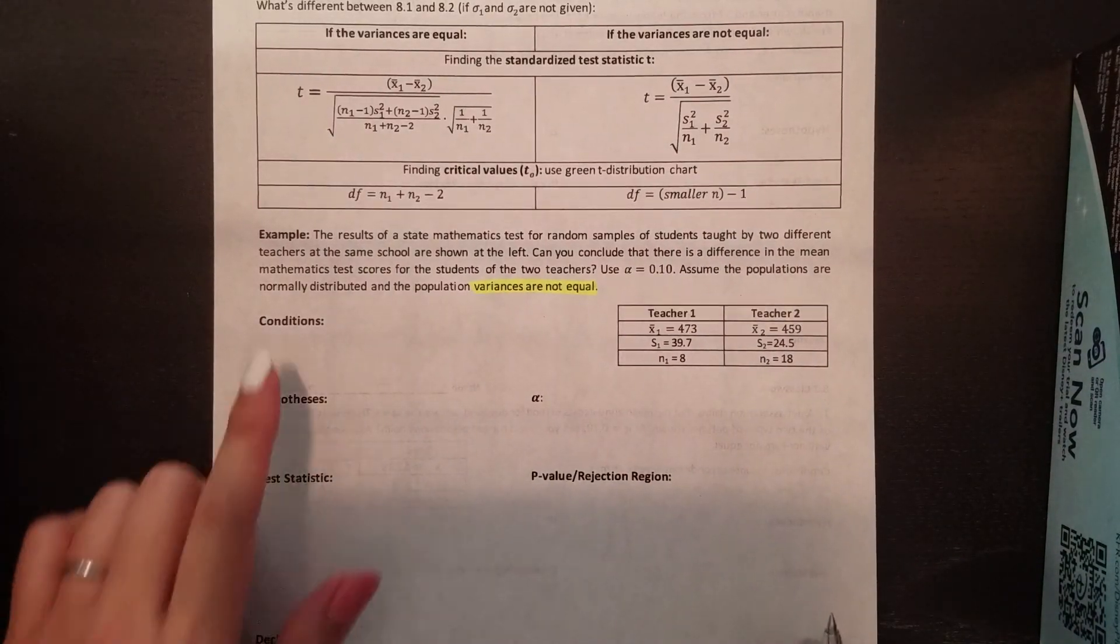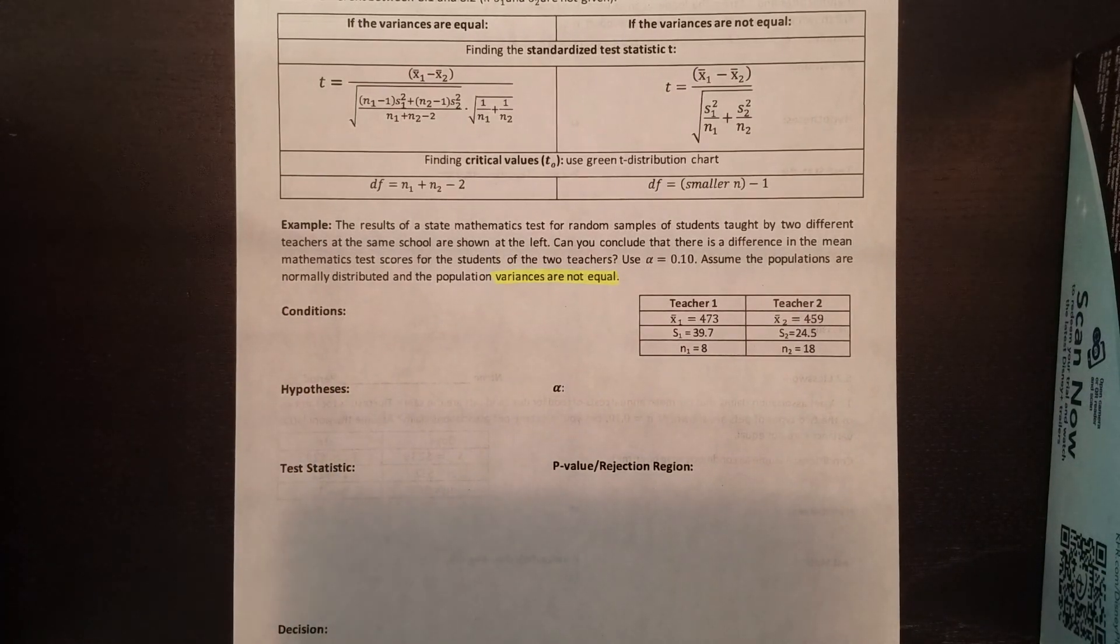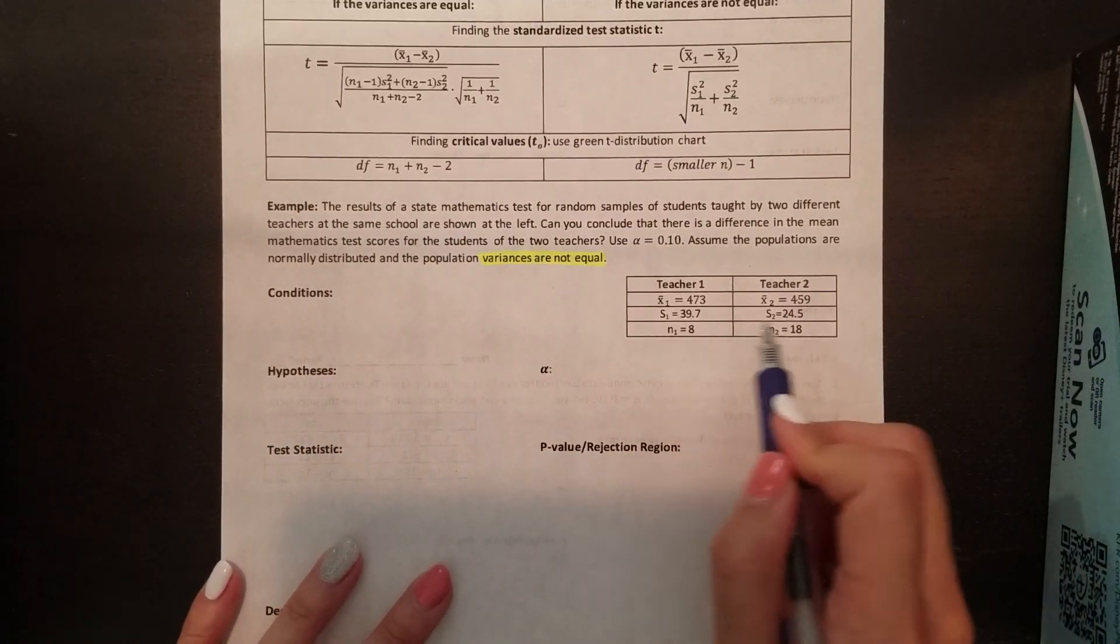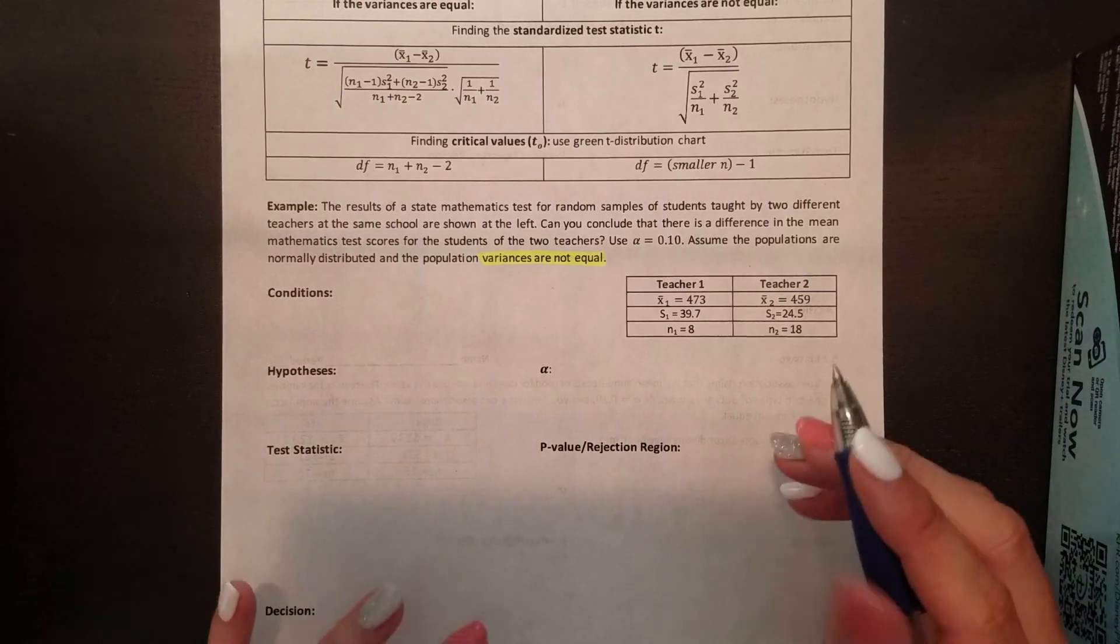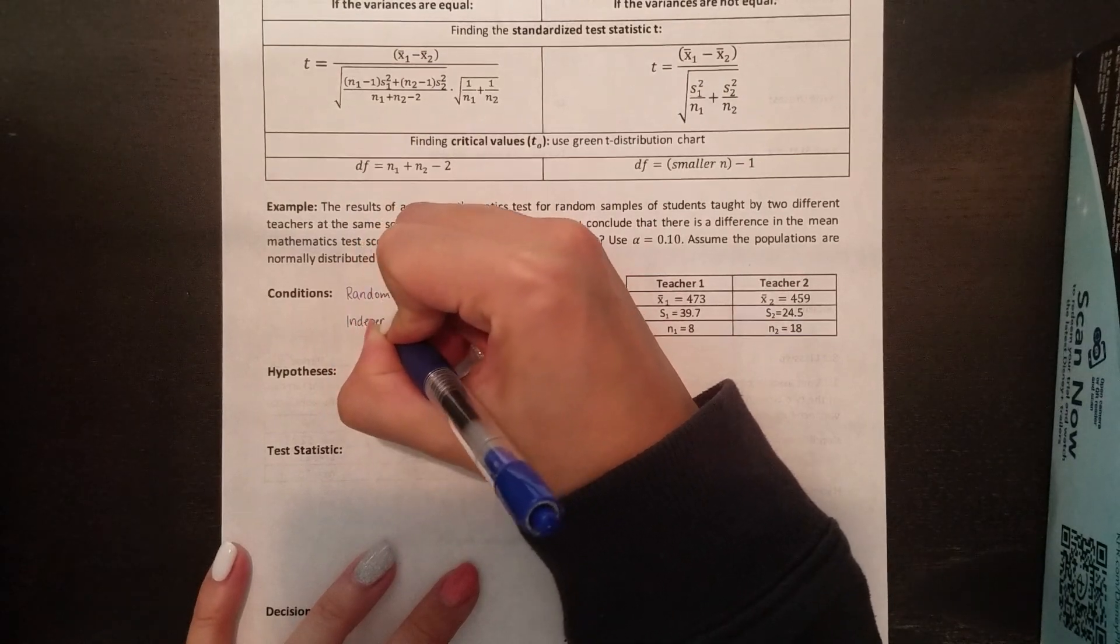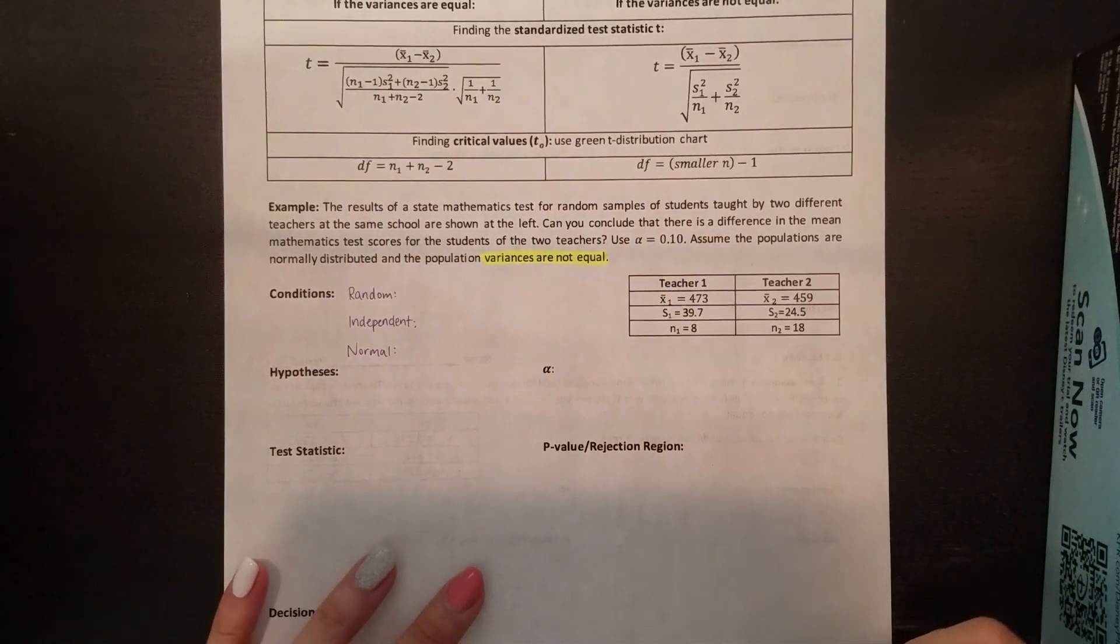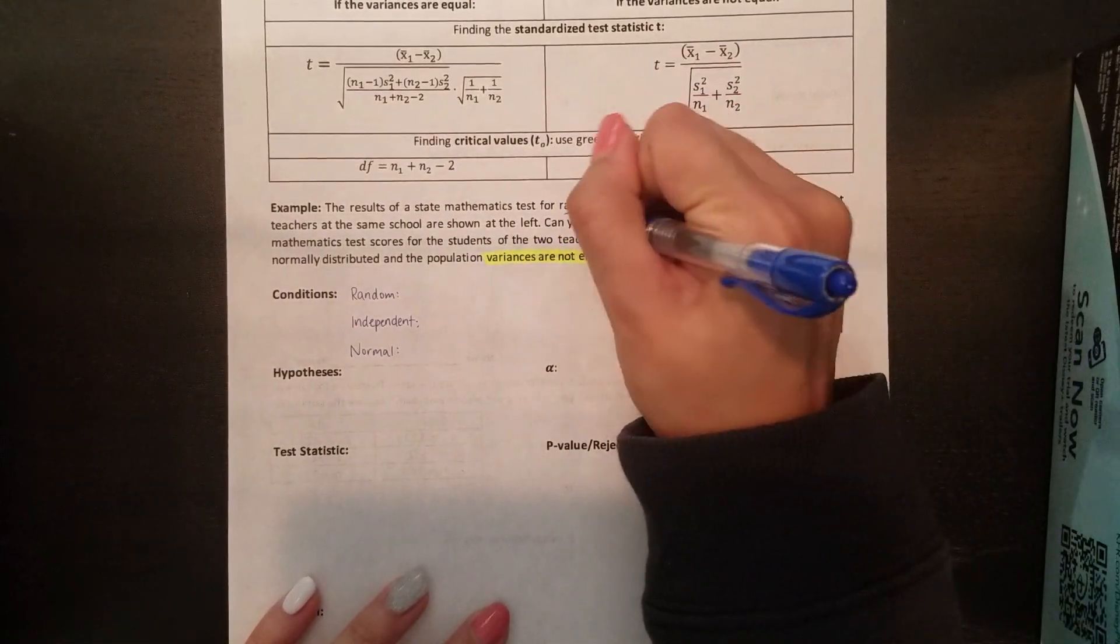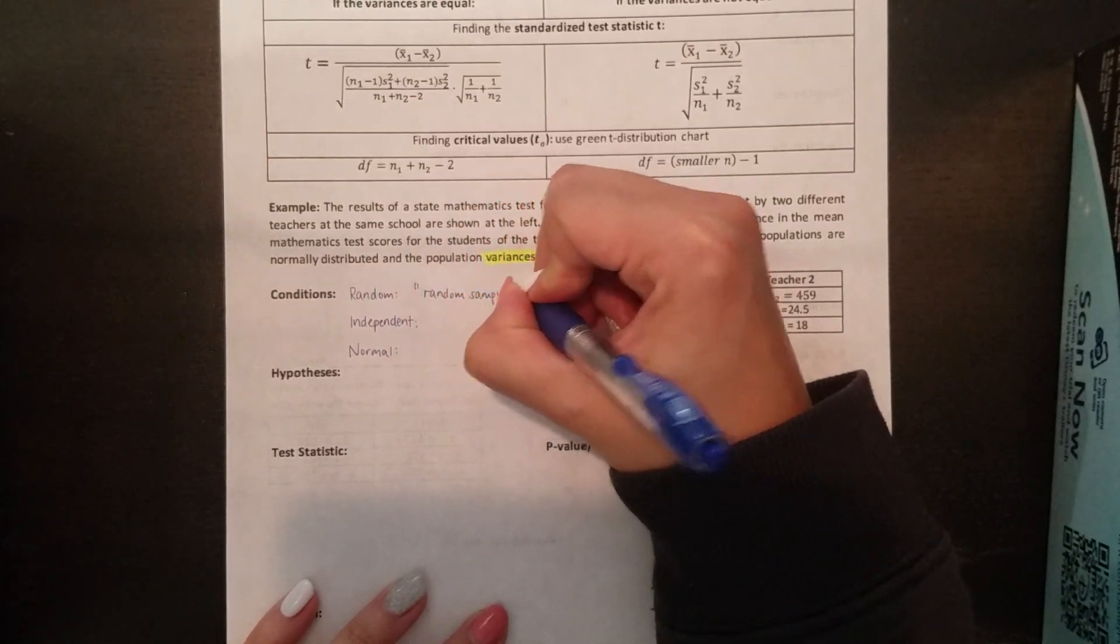Before we start, let's check our conditions. These are the same as last time. But remember, last section, we had four. One of them was that we knew the population standard deviations. Here, we don't know them. Because they only give us the sample standard deviations, that's why it's S₁, S₂, instead of that circle sigma thing with the hat. So the only conditions that we really need to check is that we have random samples, we have independent samples, and we have normal distributions. To check for random, they told us it was random samples. So that's given to us.